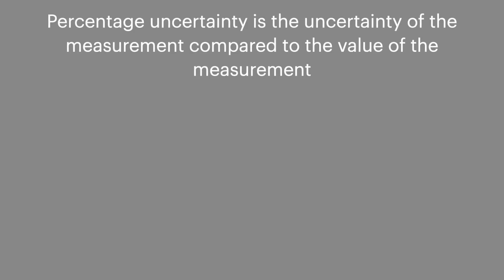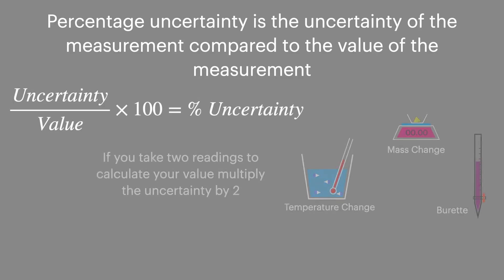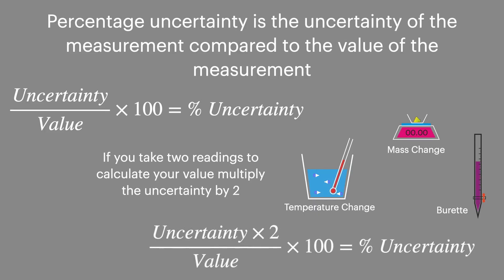Percentage uncertainty is where we link the uncertainty of equipment to the values that we're measuring. We do this by dividing the uncertainty by the value and multiplying it by 100 to get a percentage. Remember, if we take two readings, we've doubled the uncertainty. So in this case, we multiply the uncertainty by 2 before carrying out this calculation.